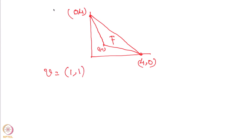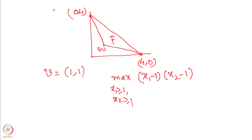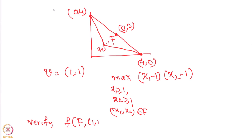Let us consider this convex hull to be F, and let us take v to be (1,1). So the disagreement vector is (1,1). What we are really looking at is maximizing (x1 minus 1) times (x2 minus 1) over all x1 ≥ 1, x2 ≥ 1 with (x1, x2) in F. One can verify that the solution is going to be (2,2).